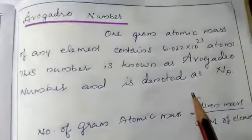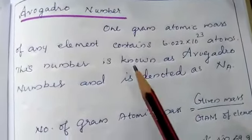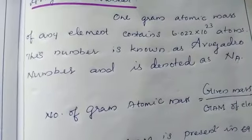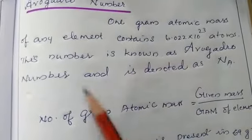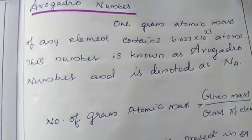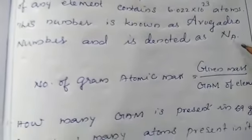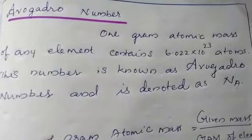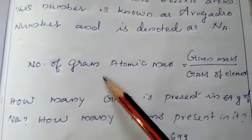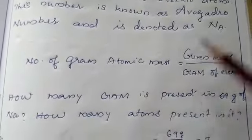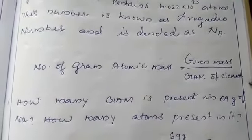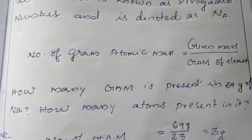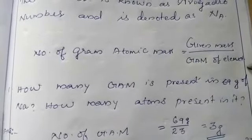These terms are very important. The number of gram atomic masses can be calculated as: number of GAM = given mass ÷ GAM of the element. GAM means gram atomic mass. So it is given mass divided by GAM of the element.